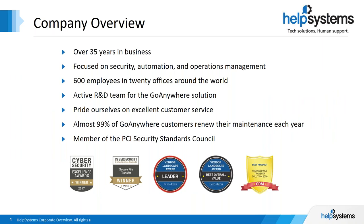Let me take a moment to share a little background on our company. HelpSystems has been around for over 35 years and focuses on developing cybersecurity, automation, and operations management solutions. We have a little over 600 employees and 20 offices around the world to serve our customers. The corporate headquarters is in Eden Prairie, Minnesota, but most of the Go Anywhere R&D staff, support, and sales are located right outside Omaha, Nebraska. Our R&D team is constantly improving Go Anywhere based on valuable feedback from our user base, with two or three major releases per year.